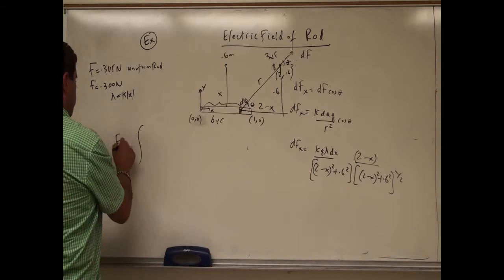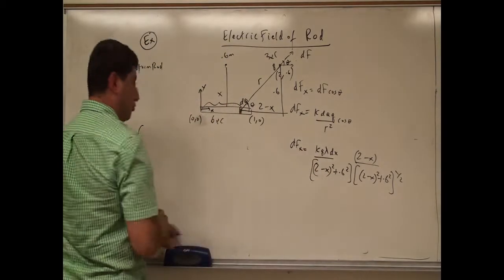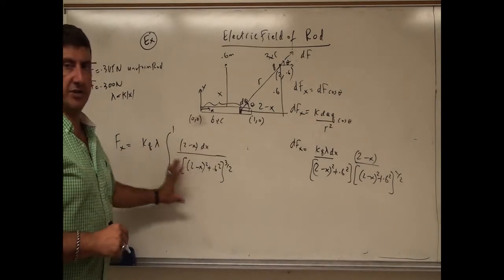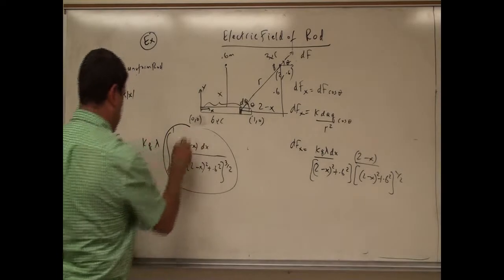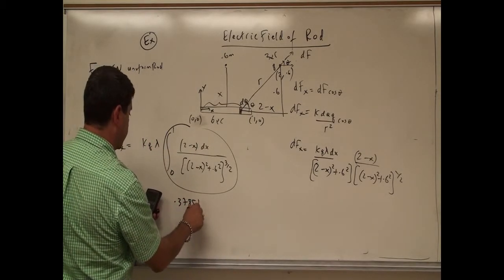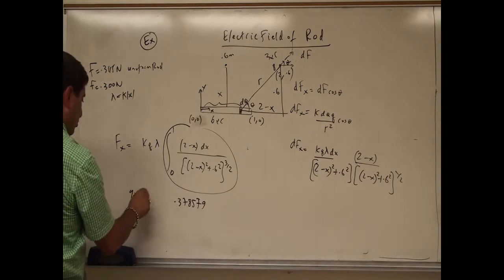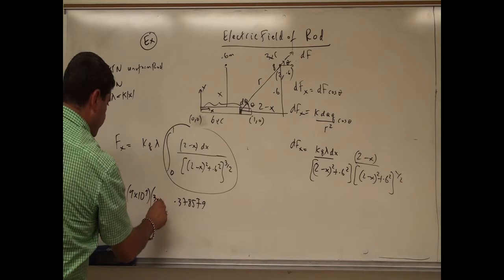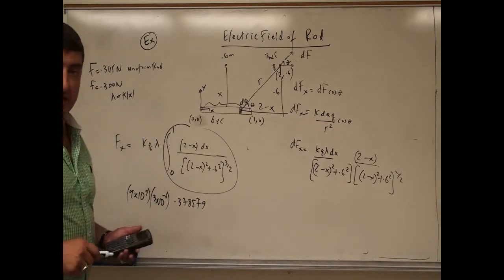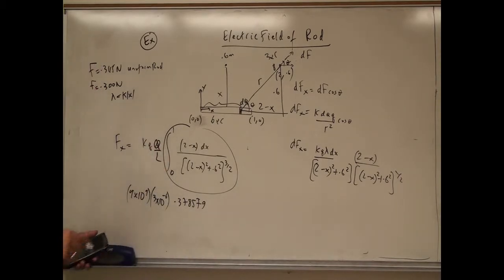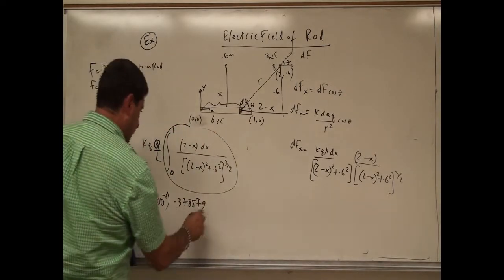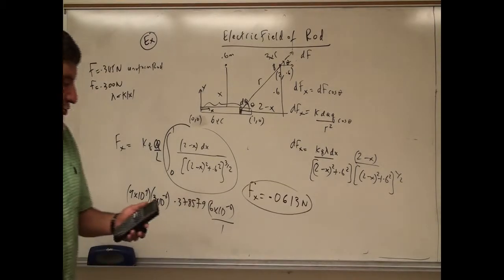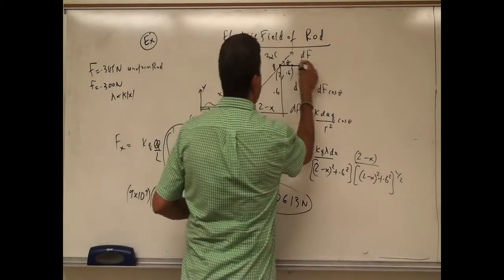We can pull all the constants — k, q, lambda — out of the integral. The integral is computed on the TI calculator and comes out to be 0.378579. Then k is 9 times 10 to the 9th, q is 3 times 10 to the minus 6, and lambda for a uniform rod is 6 times 10 to the minus 6 divided by 1 meter. Multiplying everything together gives fx equal to 0.613 newtons.